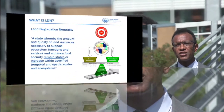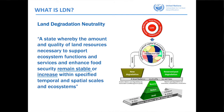So what is land degradation neutrality? It's a concept describing a state whereby the amount and quality of land resources necessary to support ecosystem services and functions, and to enhance food security, remain stable or even increase within specified temporal and spatial scales. It's about making sure that losses in one place are compensated by gains in another.